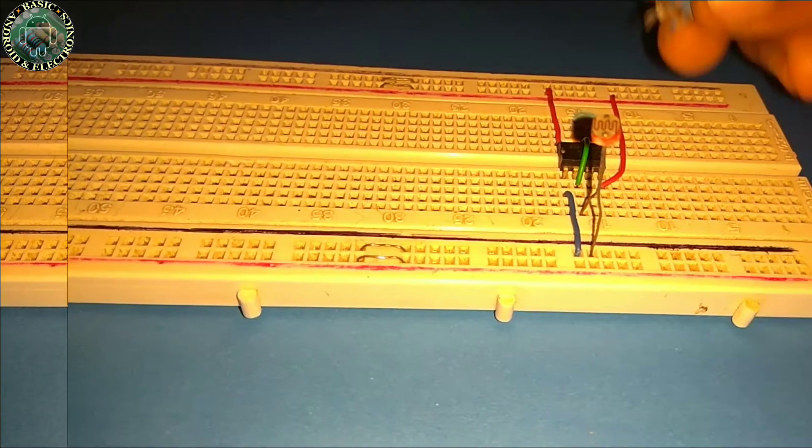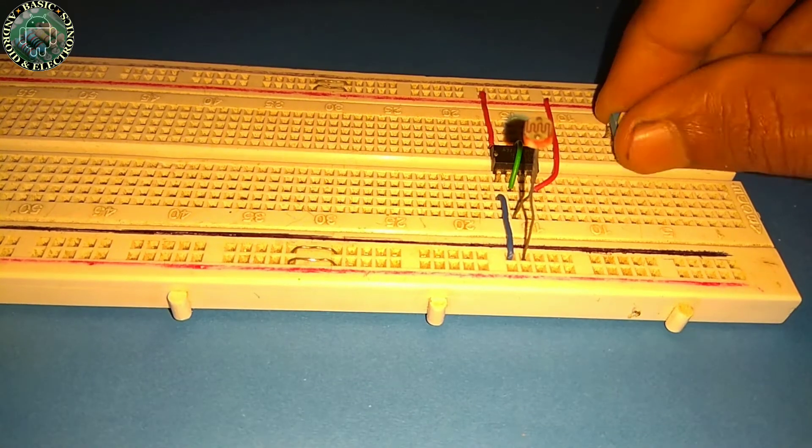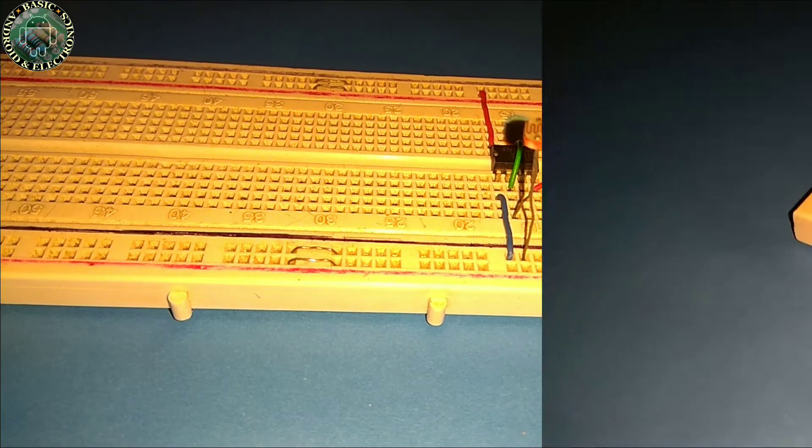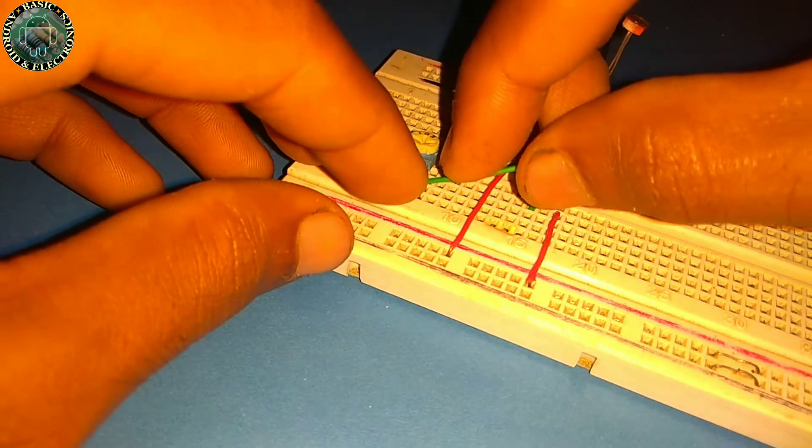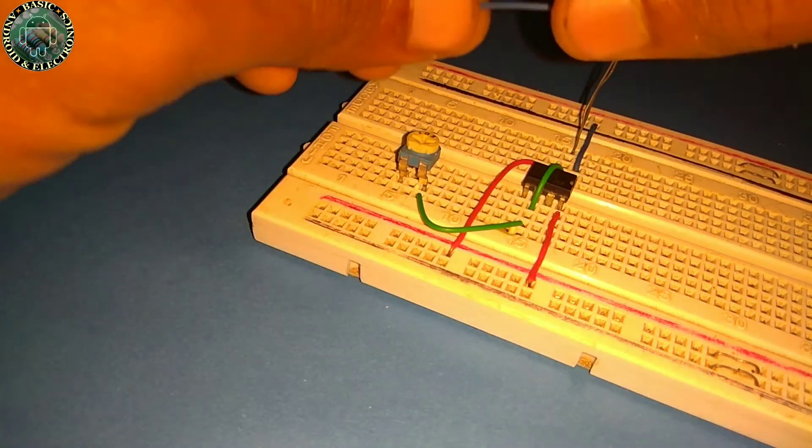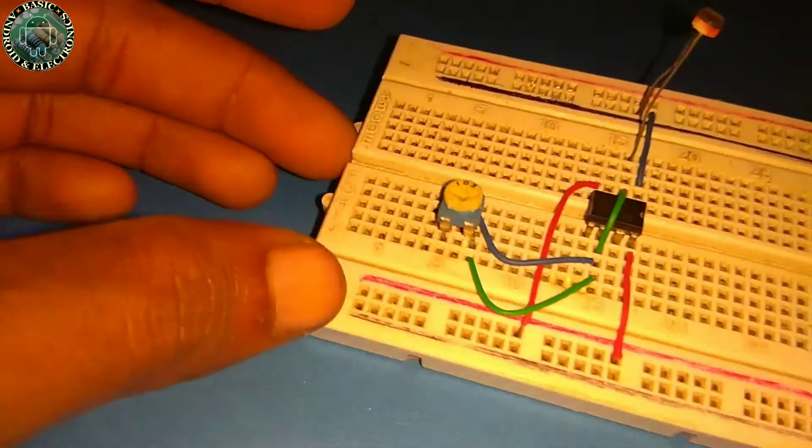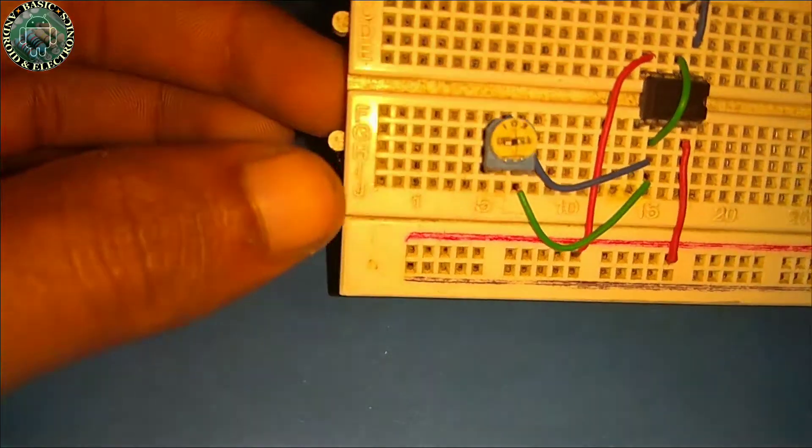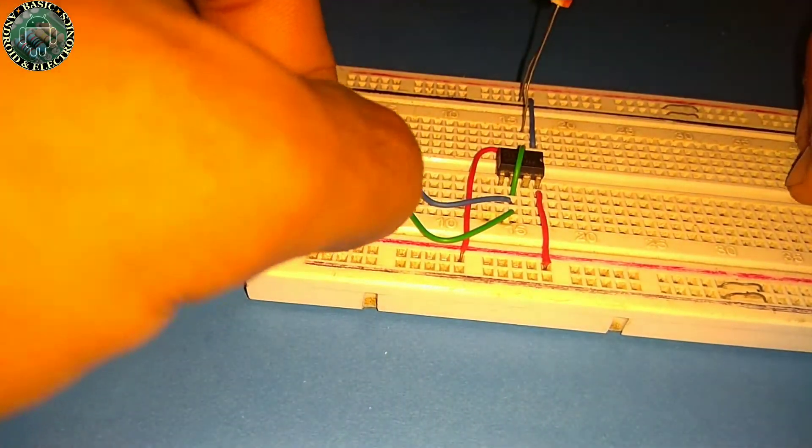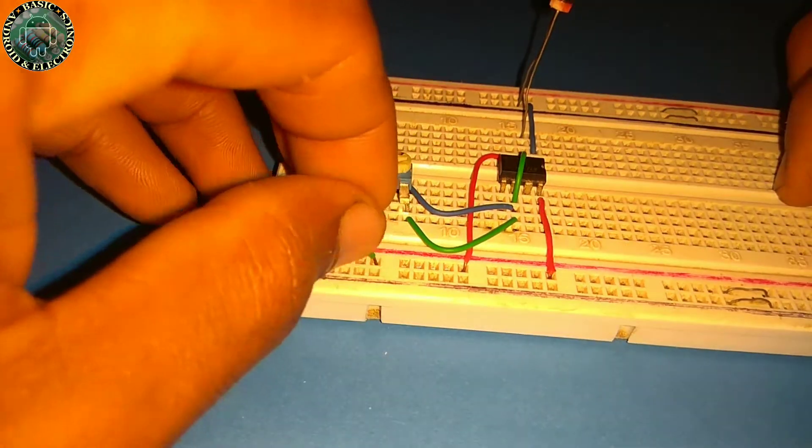Now insert the 10 kilo ohm variable resistor on the breadboard. Now connect the middle terminal and one side terminal of the variable resistor to pin 6 of the IC. And then connect the another terminal to the positive rail of the breadboard.